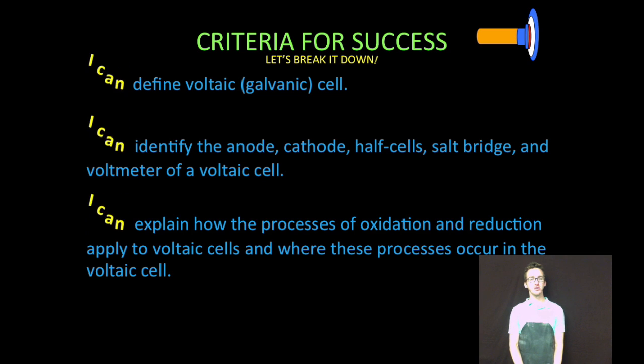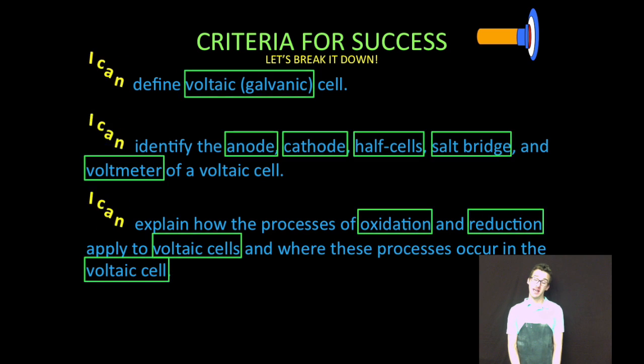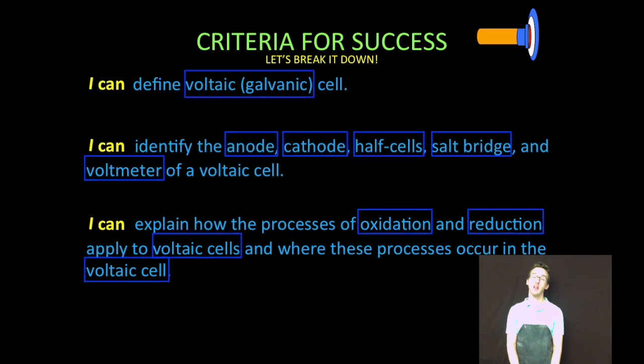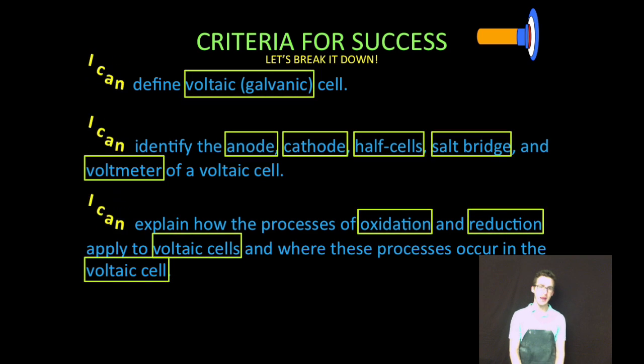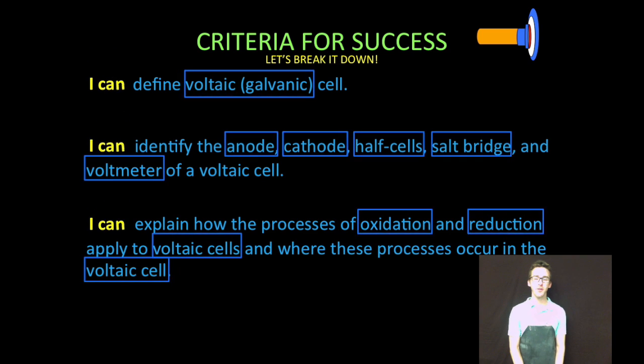First thing we're going to do, define what the heck a voltaic or galvanic cell even is. Two, we are going to identify the anode, cathode, half cells, salt bridge, and voltmeter of a voltaic cell. And finally, number three, we're going to explain how the process of oxidation and reduction apply to voltaic cells and where those processes occur.